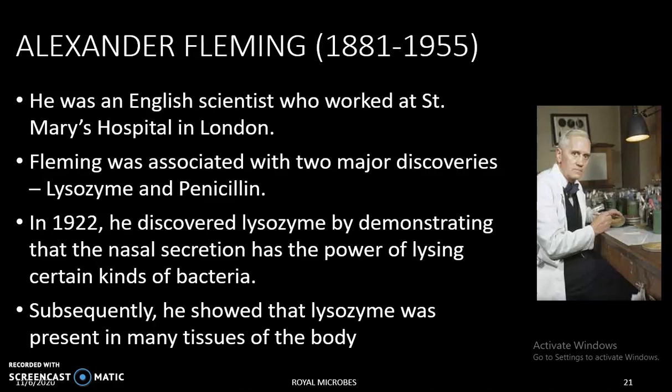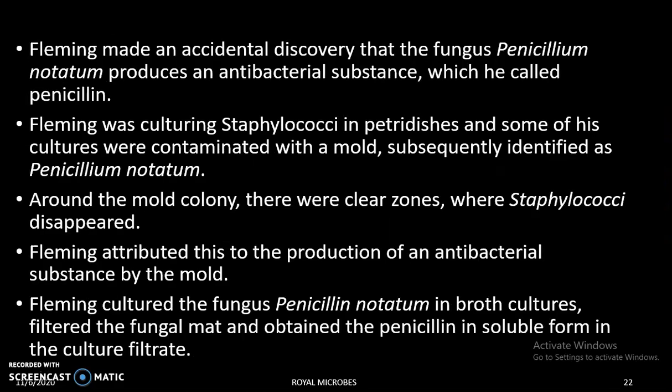Next is Alexander Fleming, an English scientist who worked at St. Mary's Hospital in London. He has two major discoveries: lysozyme and penicillin. In 1922, he found that nasal secretions contain a substance called lysozyme, which has the power of lysing certain kinds of bacteria. Fleming also made an accidental discovery that the fungus Penicillium notatum produces an antibacterial substance called penicillin.